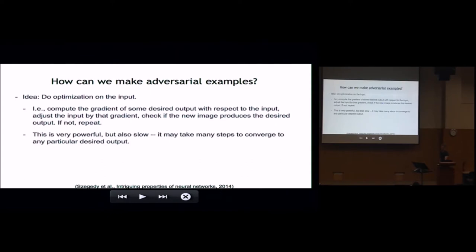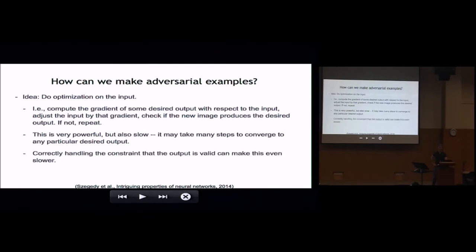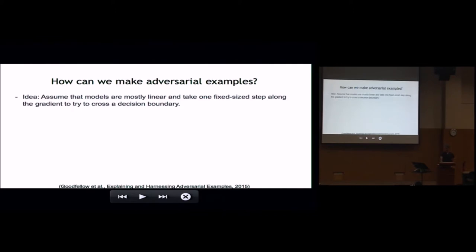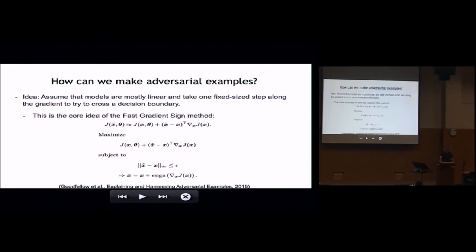This optimization-based attack is very powerful, but it's also slow. It may take many steps to converge to a particular output given a particular input, and you have to be careful to correctly constrain the output. Those additional constraints can make this substantially slower than just running a normal optimizer. So maybe we can make it faster if we just assume that the models we're learning are basically linear models, and take a single fixed-length step size along the gradient, assuming that will generally cross a decision boundary. This is the core idea behind what's called the fast gradient sign method.